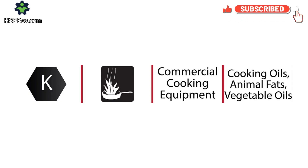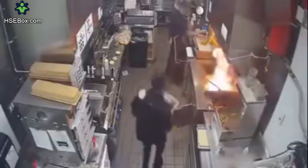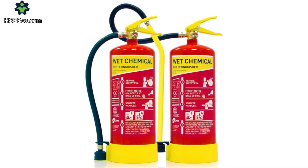Finally, we have class K fires, which involve cooking oils and fats. These are typically found in commercial kitchens where large quantities of oil are used. Pouring water on a grease fire is extremely dangerous, as it can cause the oil to splash and spread the fire even further. Instead, wet chemical extinguishers are used — these work by cooling the fire and forming a soap-like solution that cuts off the oxygen supply. Think of a deep fryer catching fire in a restaurant; this is the perfect example of a class K fire.